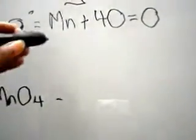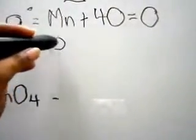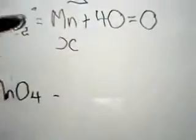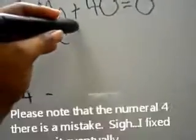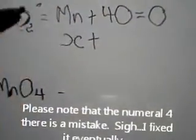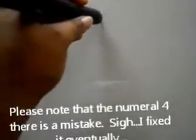...atoms of oxygen equal to zero. Manganese is what we're looking for, so we're gonna put an X right here. Now the oxidation state of oxygen is negative two, so you're gonna say four times negative two.